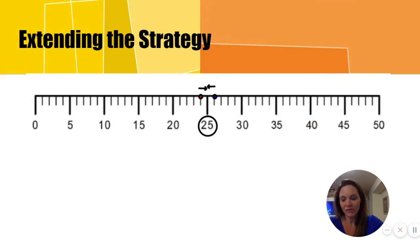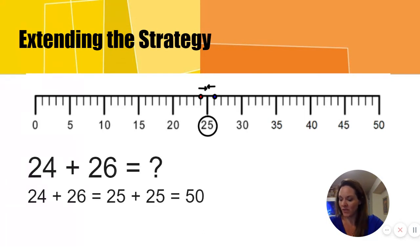Let's try it with a larger number. What is twenty-four plus twenty-six? We're going to model this on the number line. If I take one from twenty-six and give it to twenty-four, my quantities are now twenty-five and twenty-five. Twenty-four plus twenty-six is the same as double twenty-five. I know that two quarters, which are each worth twenty-five cents, is a total of fifty cents. So twenty-four plus twenty-six is the same as twenty-five plus twenty-five, or fifty.